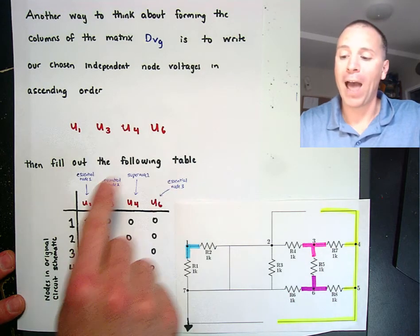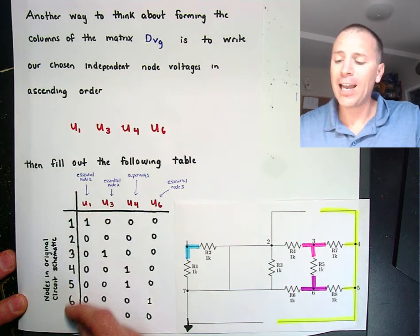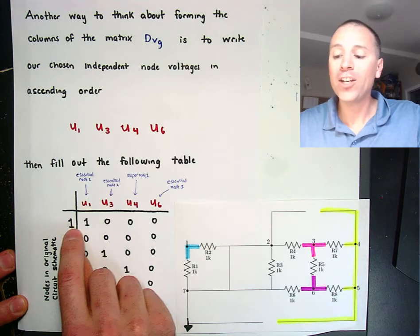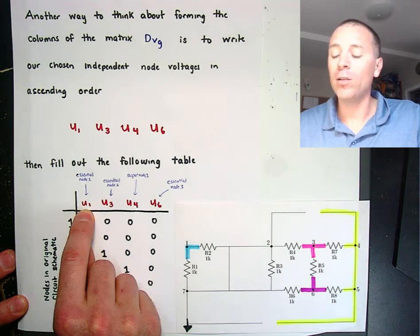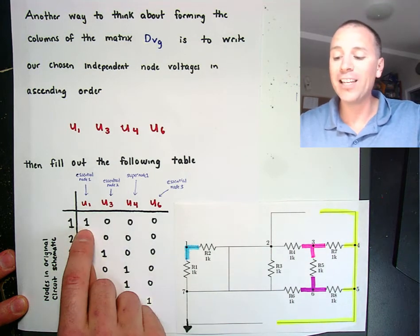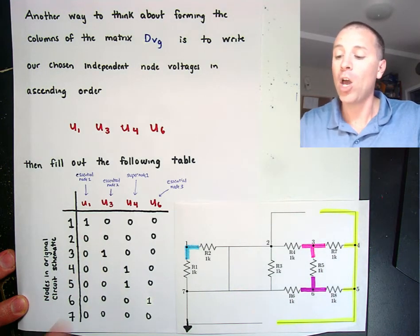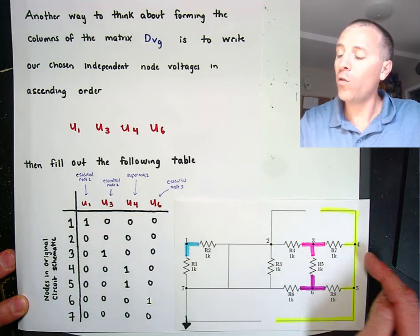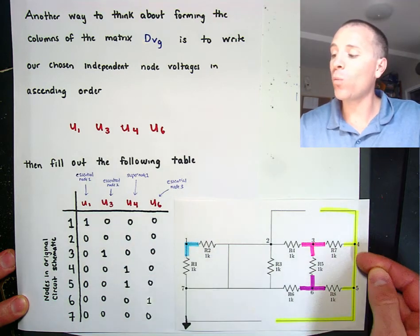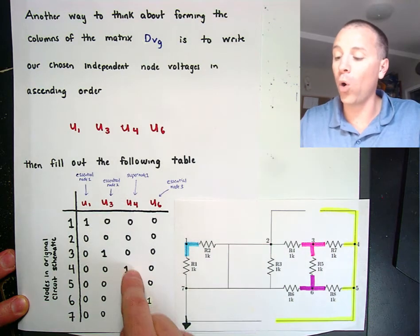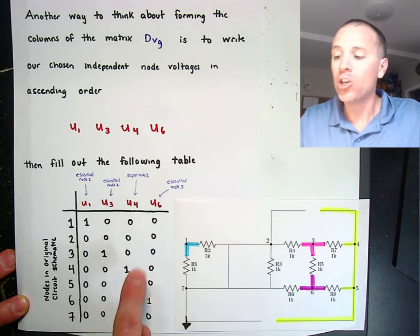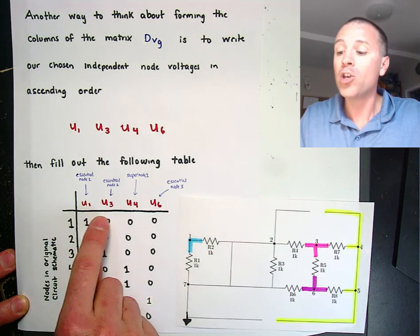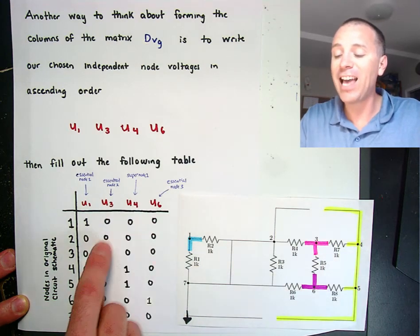Down the side we enumerate nodes in the original circuit, nodes 1 through 7, and for each independent node variable we determine which original nodes it is incident to in the deactivated circuit. u1 is only incident to node 1; u3 is only incident to u3 — that makes sense because they're ordinary nodes. u4 is actually incident to both 4 and 5, because when we deactivated it we created a short circuit there, so we put a 1 in positions 4 and 5. u6 is an ordinary node, only incident to itself. u7 doesn't show up because it was grounded; u2 is connected to ground and is non-essential; u5 became the same as u4. This is the matrix D sub vg.